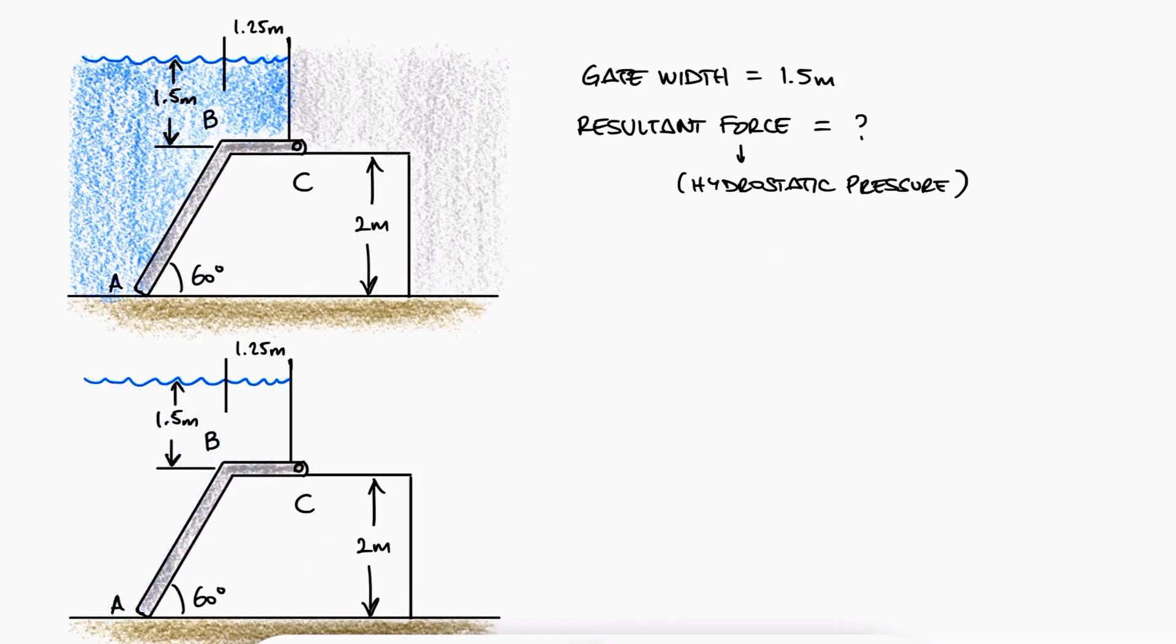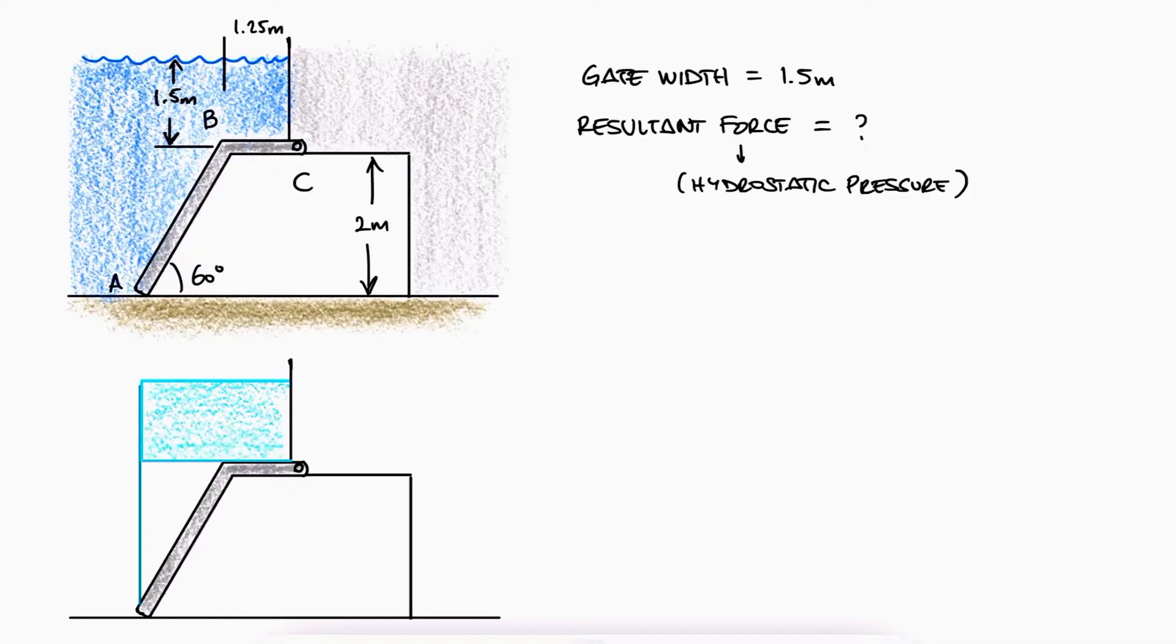From the previous examples as well as that main video, we know that both the weight of the water above our members, in this case the gate, as well as the horizontal force caused by the hydrostatic pressure, will be the forces that affect our member.